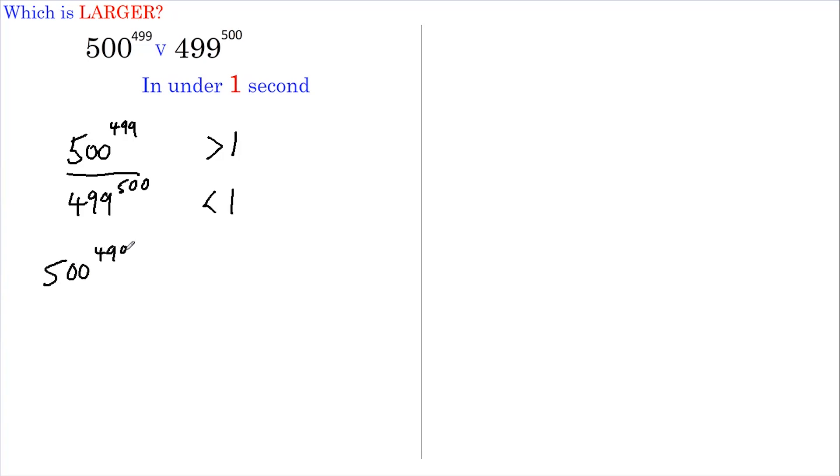Let's write this out again: 500 to the 499 divided by—I'm now going to write this as 499 to the 499 and 499 to the power of 1. We can do this because the base numbers are the same, and if we add the powers we get back to 500. So now let's rewrite this as 500 to the 499 divided by 499 to the 499 multiplied by 1 over 499.